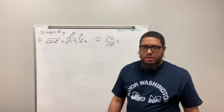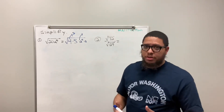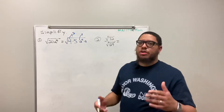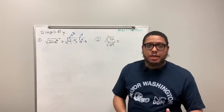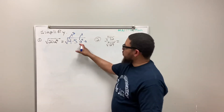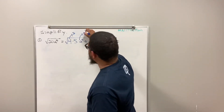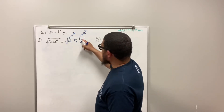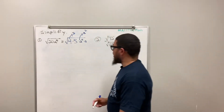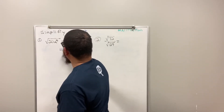So if it was a to the 100th power, when it comes out it's a to the 50th — because 100 divided by 2. If it was a to the 14th power, when it comes out it's a to the 7th, because that's 14 divided by 2. In our situation, we got a to the 4th, so when that comes out, that's going to be a squared. Because 4 divided by 2 gives me a squared. So the 2 comes out and the a squared comes out.